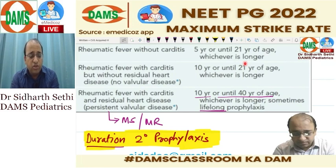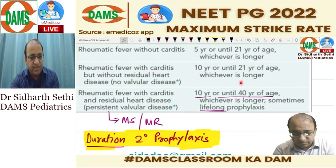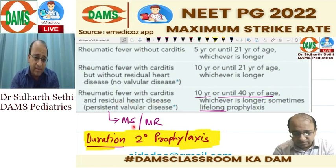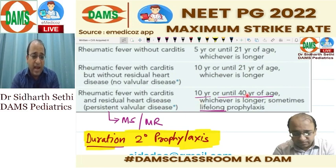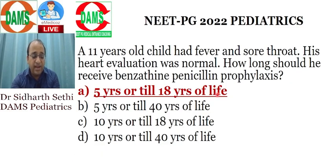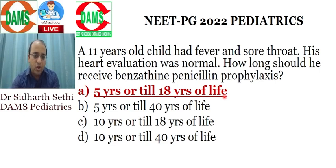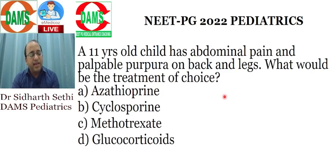In your exam, 21 years was not in the options, so the best answer was five years or 18 years. If there is reversible carditis, it is 10 years or 21 years of life, whichever is longer. If there is residual heart disease such as residual mitral stenosis or MR, then 10 years or until 40 years of life, whichever is longer — ideally lifelong.